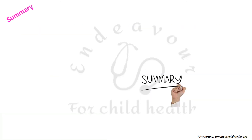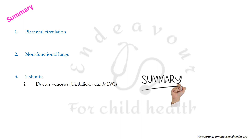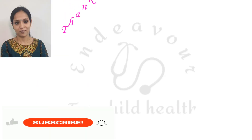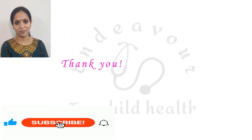To summarize the main differences between fetal and postnatal circulation: placental circulation provides gas exchange in the fetus; lungs are non-functional resulting in very little pulmonary venous return to the left atrium; and three shunts are present — ductus venosus between the umbilical vein and inferior vena cava, foramen ovale between the right and left atrium, and ductus arteriosus between the pulmonary artery and descending aorta. Thank you so much for your patient listening.